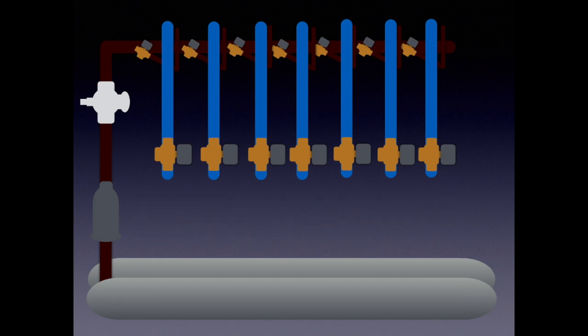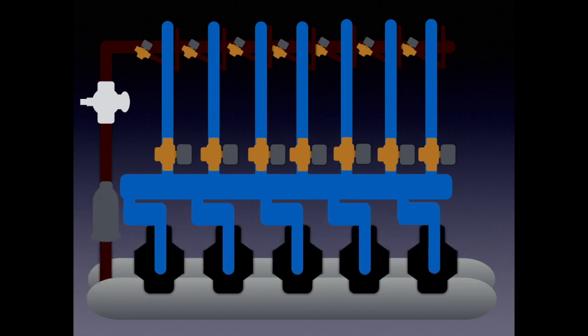Following the EPR valves our suction pressure is then dumped into our suction header. After the suction header that suction pressure is then drawn through suction filters and then into the compressor.